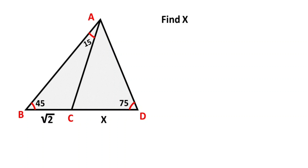In this video we have one triangle. Here is 45 degrees, here is given 15 degrees, this angle is given 75 degrees, and this side is given root 2. We need to find x.